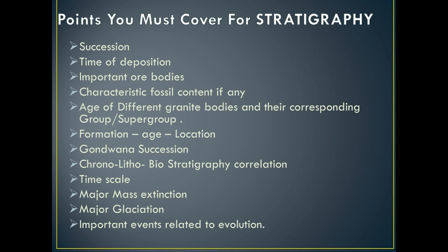Next, we have the important ore bodies or ore deposits. And next, we should remember the characteristic fossils contained in each group, if any. If the group contains any particular characteristic fossil, remember them. We generally see fossils in the rocks of Sivalik and in the rocks of the Kutch area, and we get important plant fossils from the Gondwana Supergroup. The next point is the age of different granite bodies and their corresponding group or supergroup — know if there is any granite body associated with a particular group.